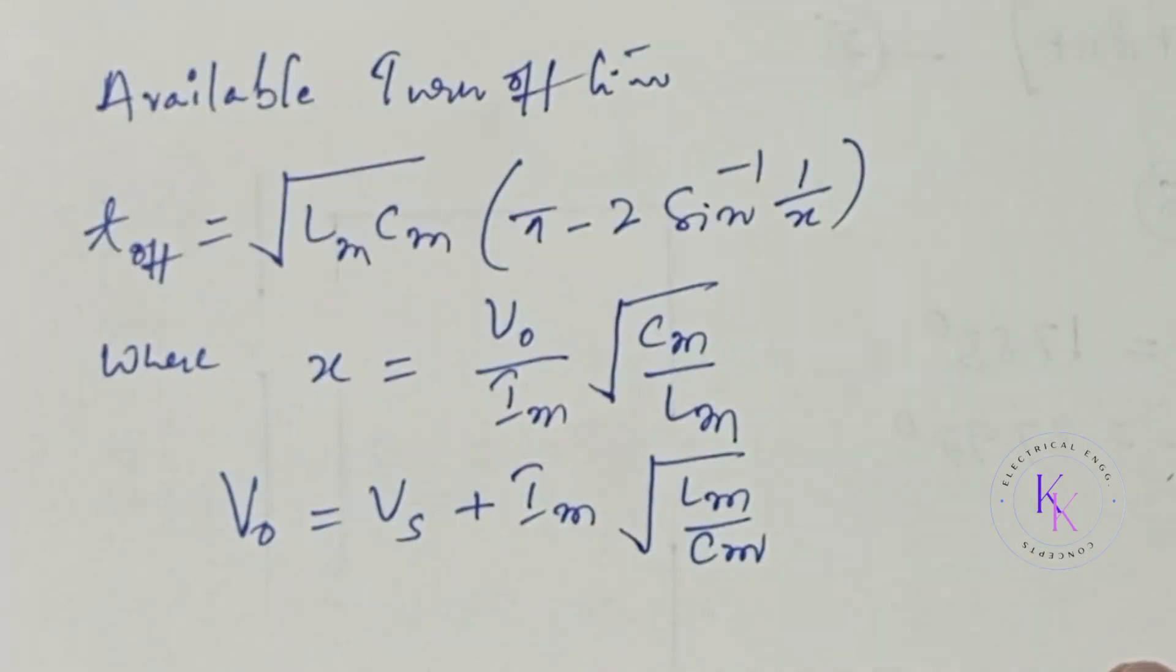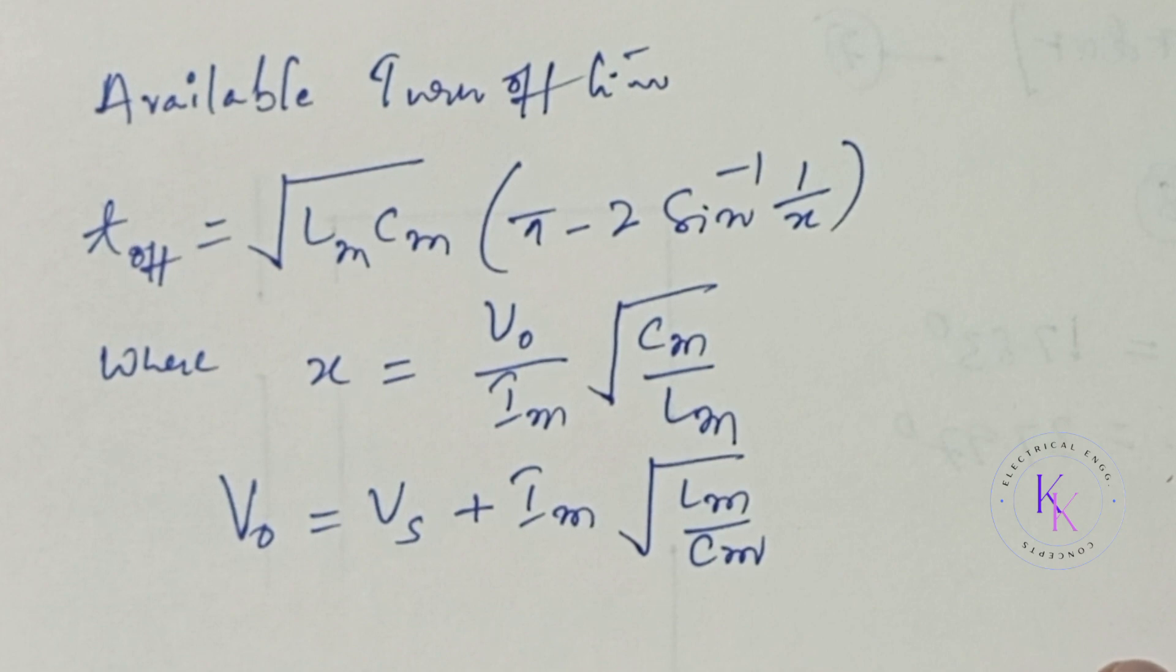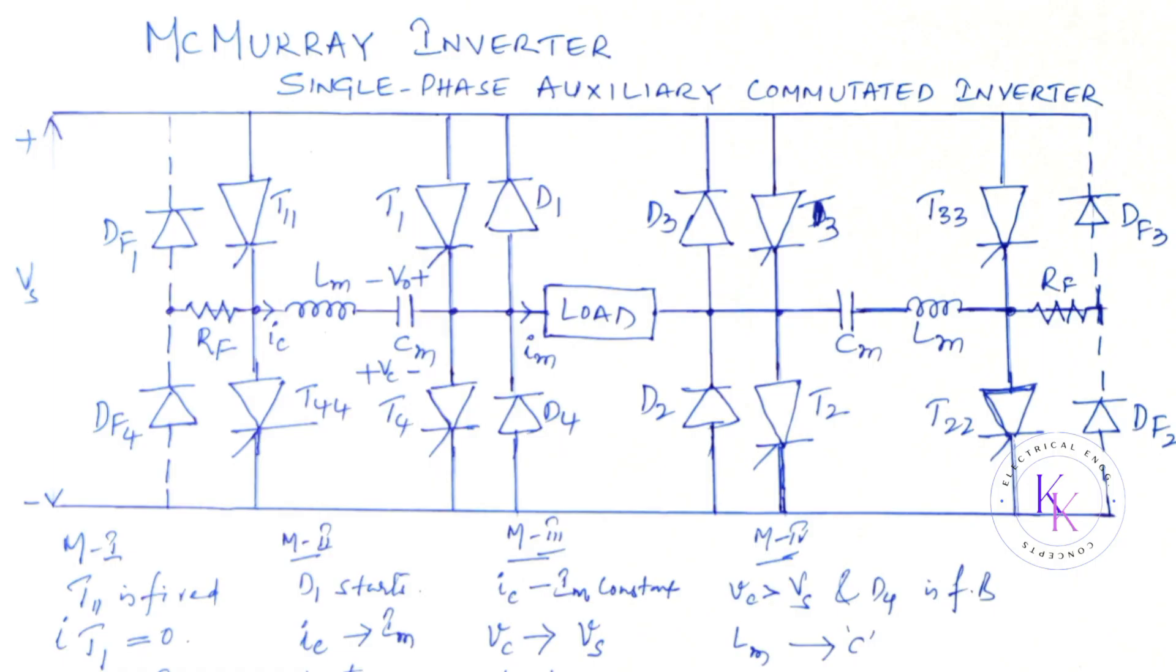In an inverter, the load current varies as a function of time and the commutation circuit should be designed for the peak load current. The capacitor voltage V0 which depends on the load current at the instant of commutation increases the voltage and the current ratings of the devices and the components. By connecting diodes, the excess energy can be returned to the DC source as shown in the figure with the dotted lines. A part of energy would be dissipated in the resistor R, which may be replaced by a feedback winding.